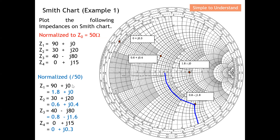To summarize example 1: the first point lies purely on the resistivity line; the second point is above the resistivity line because it has a positive imaginary term; the third point is below the resistivity line because it has a negative j component; and the last point has zero resistivity with only a reactance of 0.3, placing it on the left edge. Hopefully this gives a clear indicative example of how to plot all points onto the Smith chart.